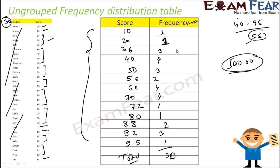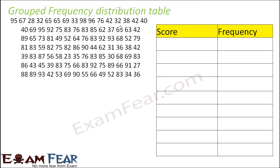This is the case of the ungrouped frequency table because the score is not grouped. Now let's understand the grouped frequency table. Suppose you have 1 lakh data — a huge amount. You're not happy with 60 rows and you want even fewer. So in that case you can create groups for the score to make it more human readable.